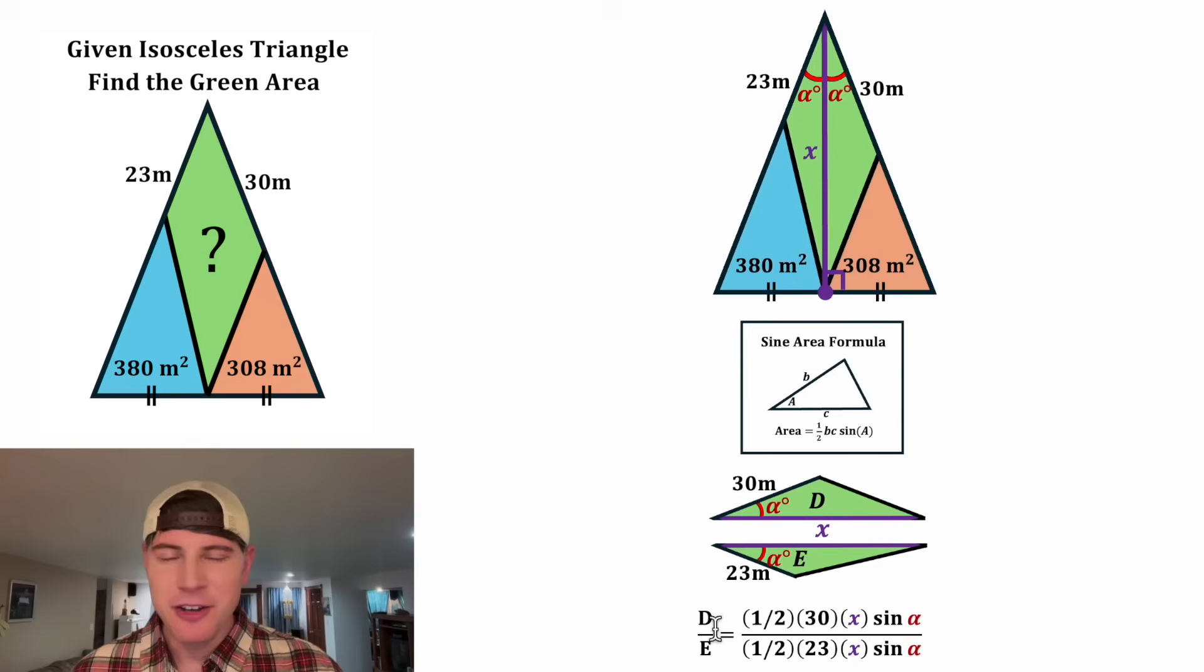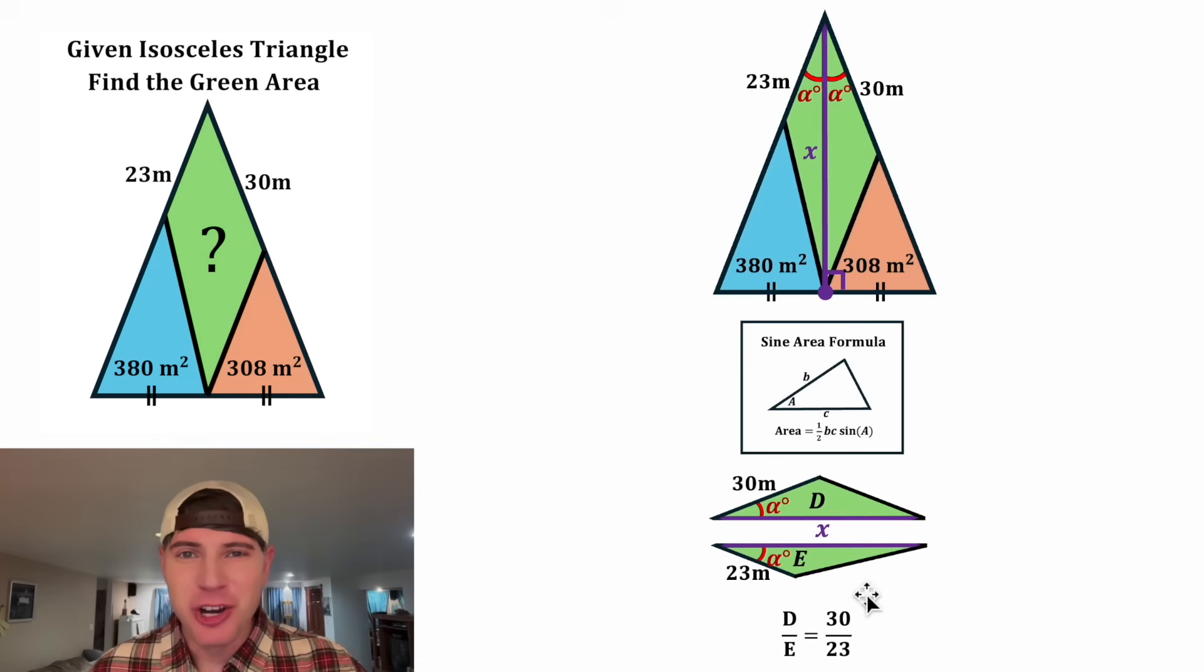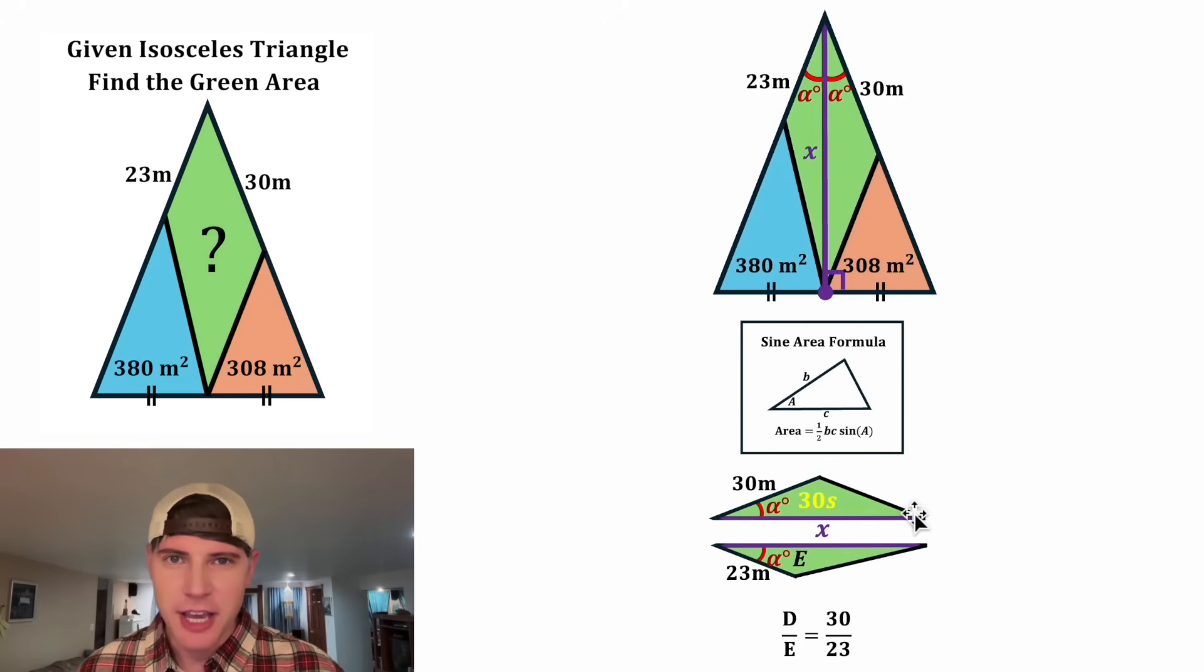On the left hand side, we just have D over E. And on the right hand side, the one half and the one half will cancel each other out. And the same thing for these two x sine alphas. They will also cancel each other out. So now we know the ratio of the areas D over E is equal to 30 over 23. And now that we know this relationship, there's some s such that D will equal 30s and E will equal 23s. And now we got to try to find that s.